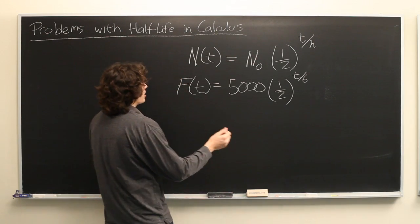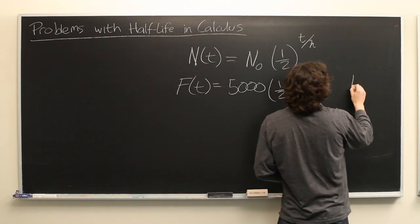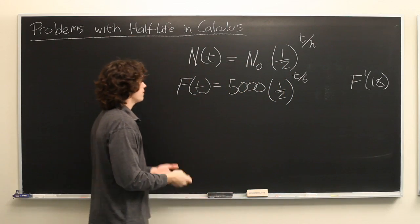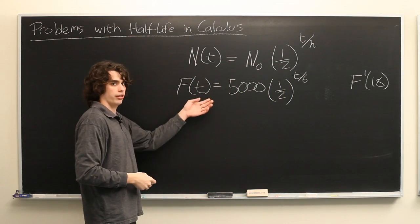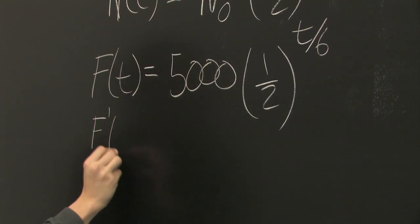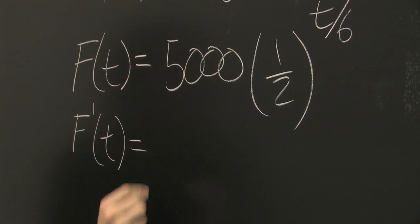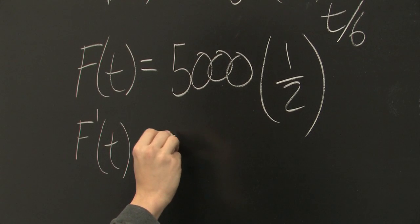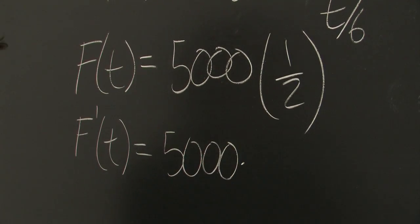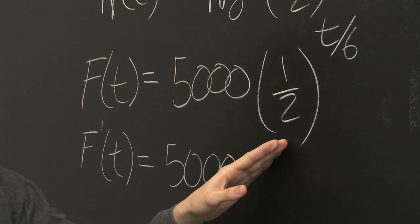So what we're really asking for is F prime of 18. Well, that's not too difficult. First, we'll just take the derivative of this. Find that F prime of t is equal to, take out the constant, 5,000.